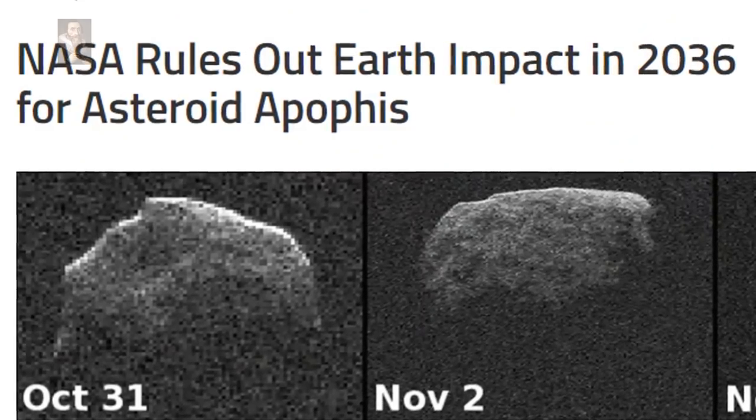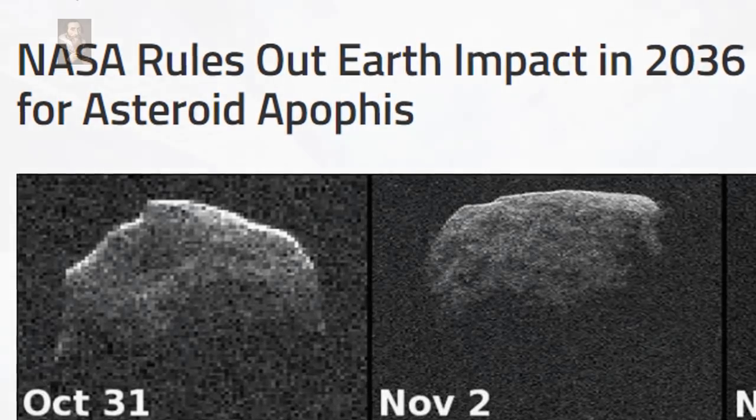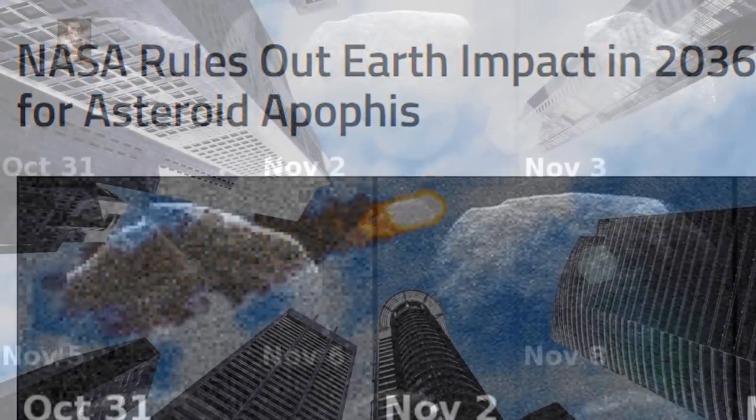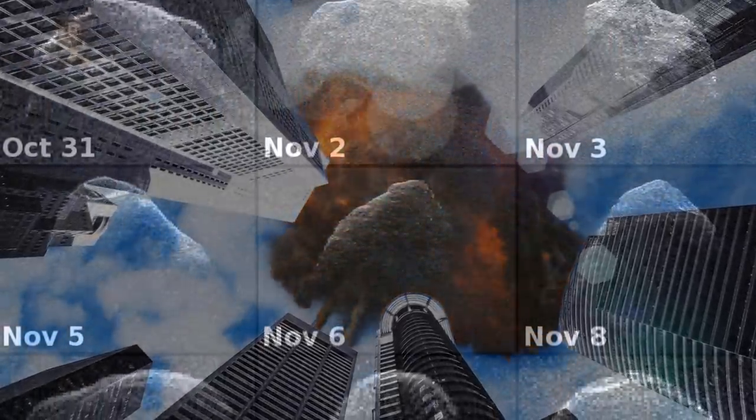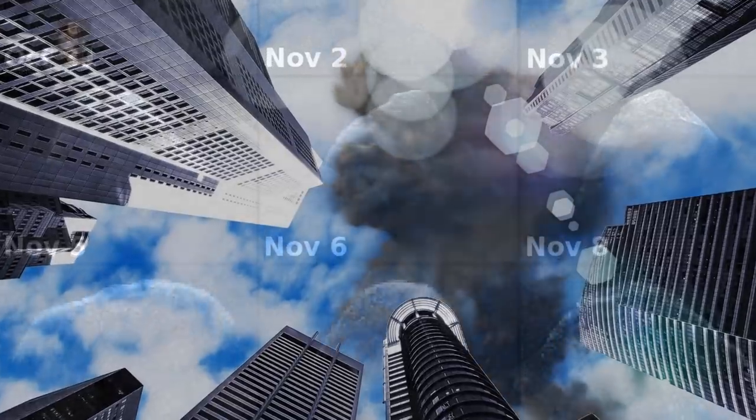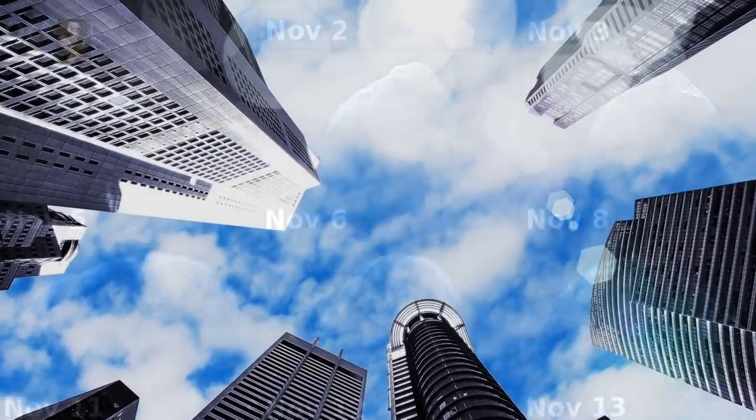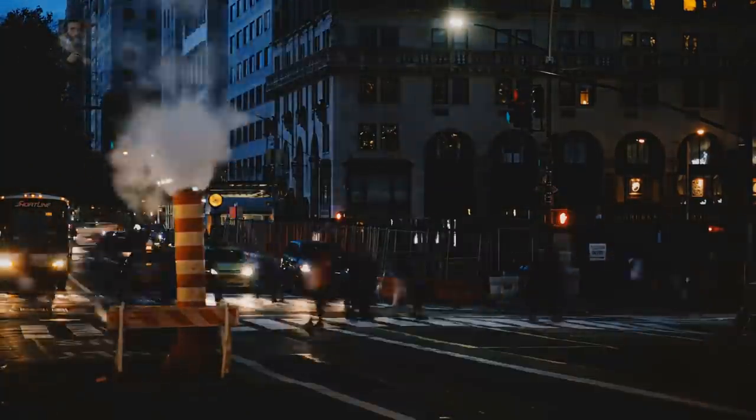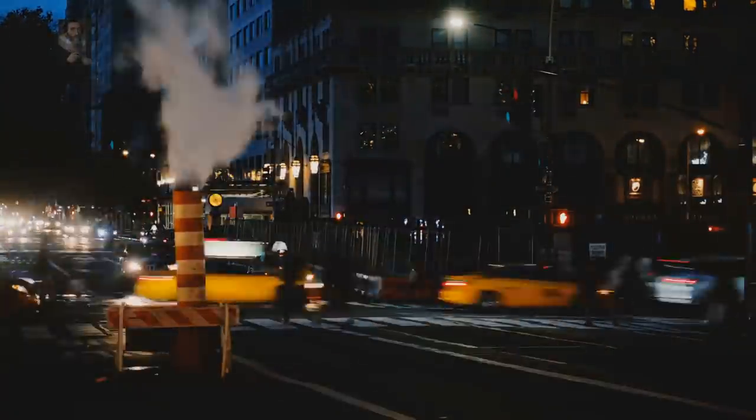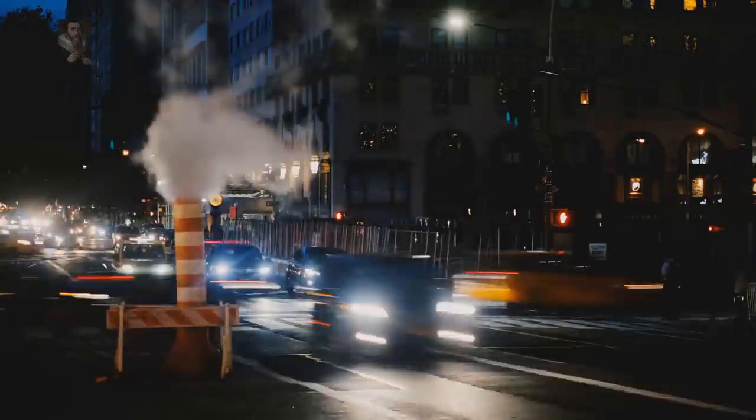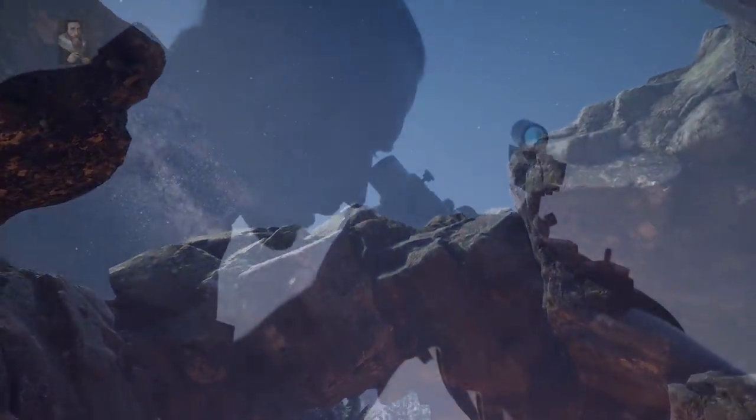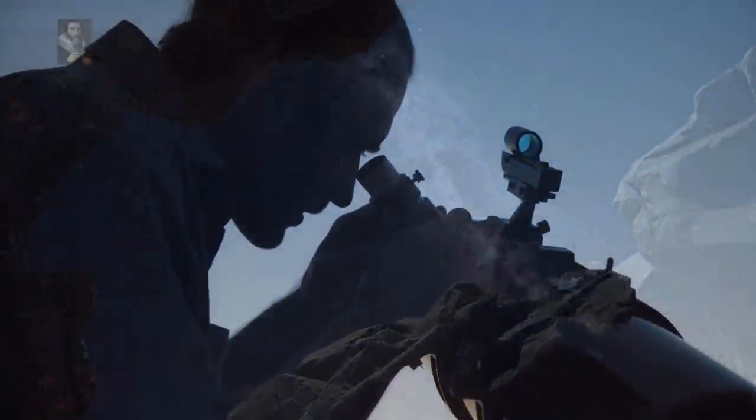But NASA says no, nothing to worry about in both 2029 and 2036. It will pass safely, but they can't possibly know that for sure because they don't know the influence other celestial objects may have on the asteroid. This is clearly a case of not panicking our civilization, but we should be aware of the potentials involved, and no doubt as we get closer to the event, tensions will heighten.